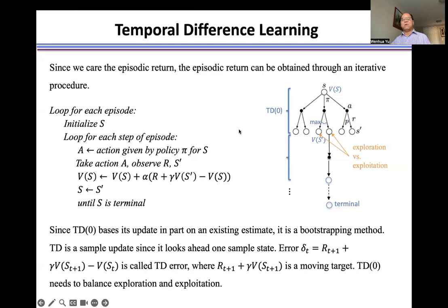For the control problem, we cannot use this state value function distribution to find the policy. And then, of course, we can use the policy to update, to estimate the state value function again. Finally, we get the optimal policy and the optimal state value function.